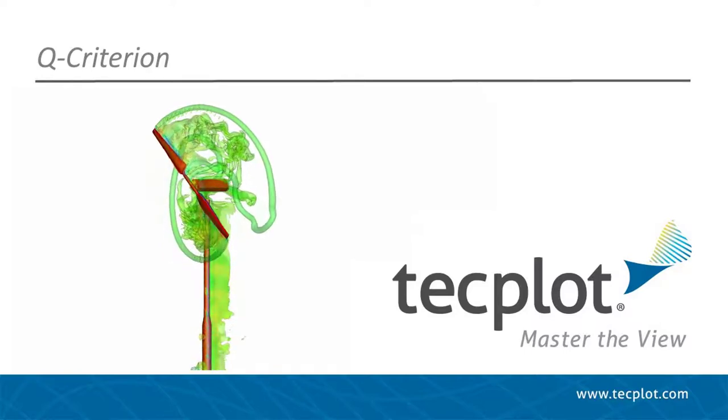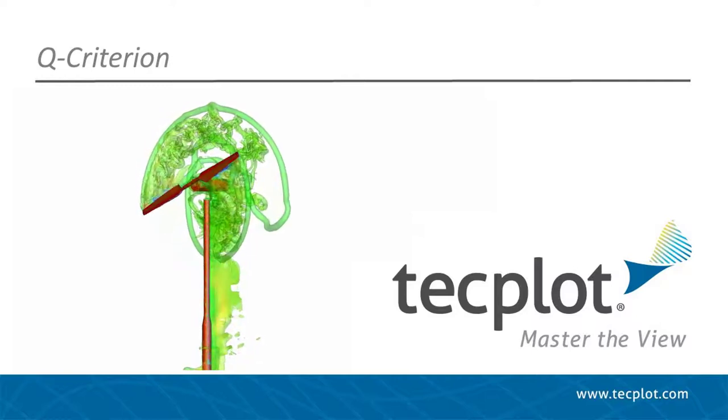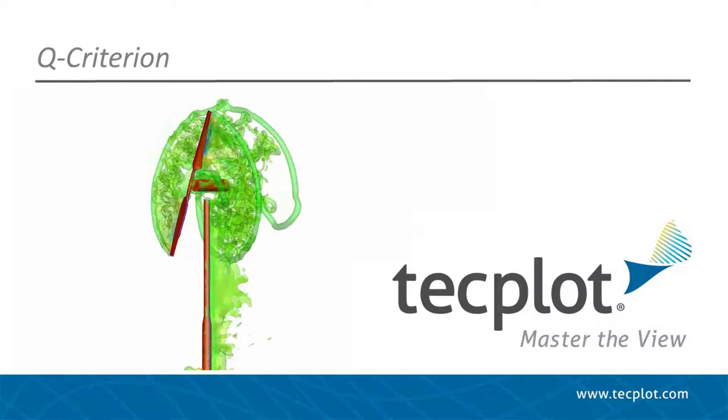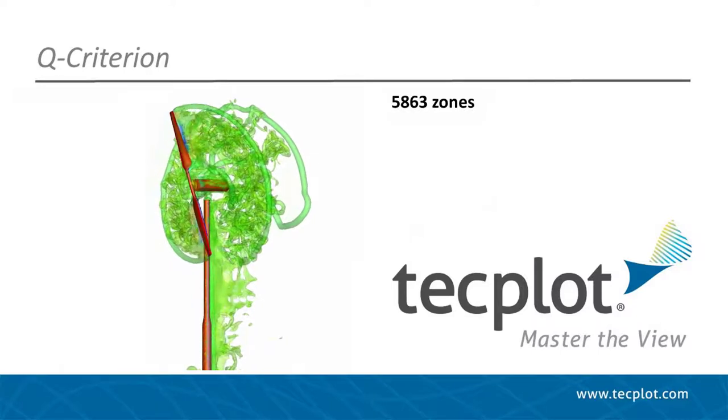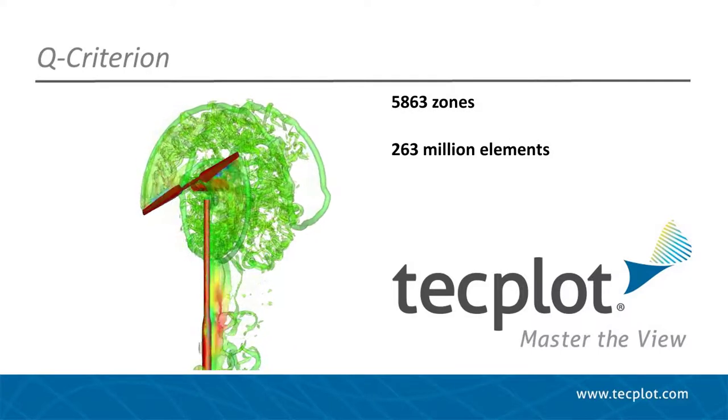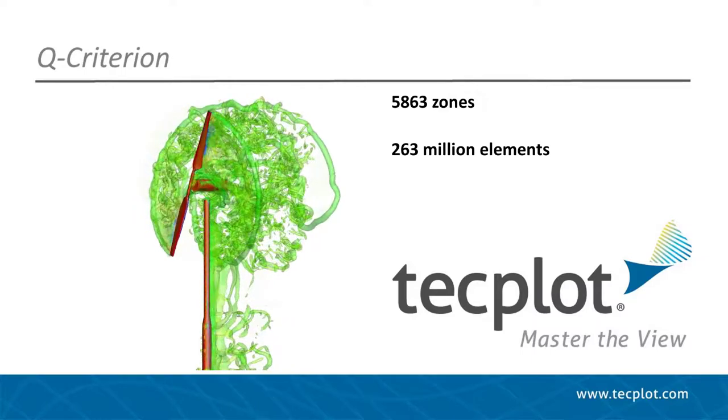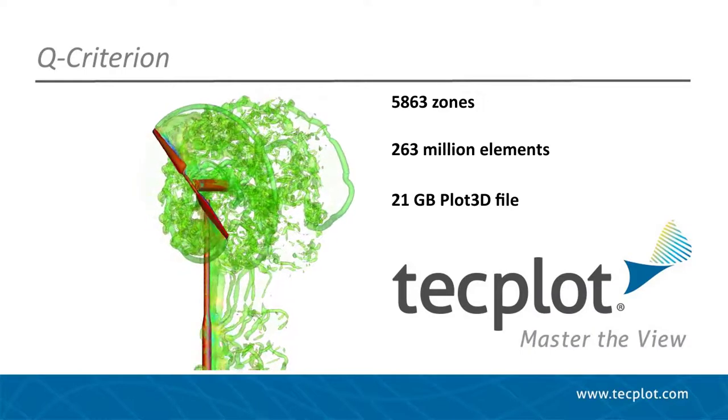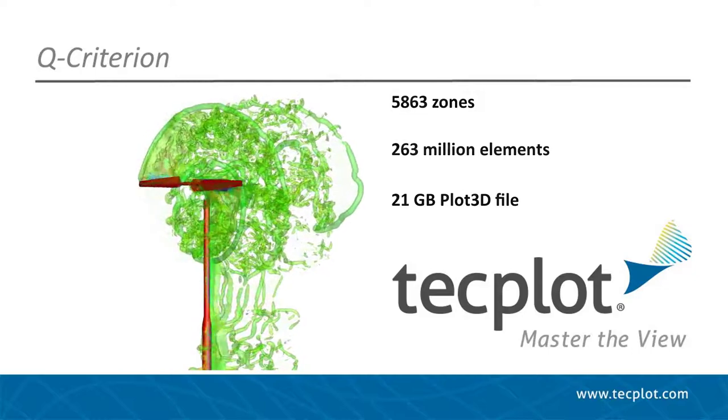In this example, we are using the final time step of a transient simulation of a wind turbine. An overset mesh was used and is composed of 5,863 zones with a total of 263 million elements. The output is in PLOT3D file format and the grid and solution files combined for a total of 21 gigabytes.